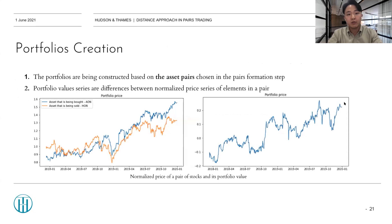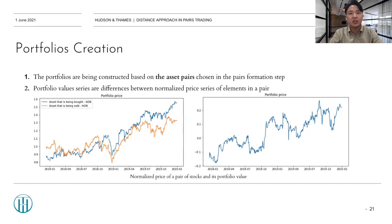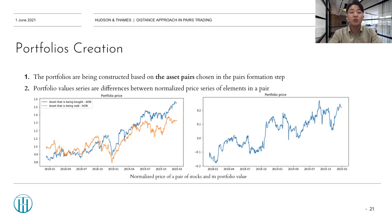In the portfolio creation step — step two of trading signal generation — portfolios are constructed based on the stock pairs chosen in the pairs formation step. The portfolio value series is the difference between the normalized price series of the elements in a pair. The reason we construct the portfolio this way is to view a pair of stocks as one price series by differencing the two. Below is a plot of two price series of stocks and the portfolio: on the left side is a plot of the two stocks in one pair, and on the right side is the portfolio price, which is just the difference of the two stocks.